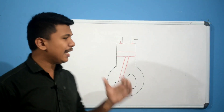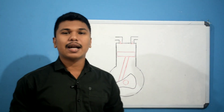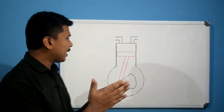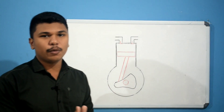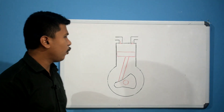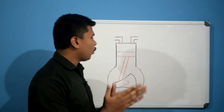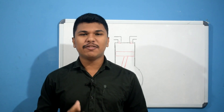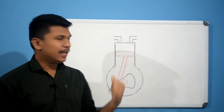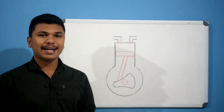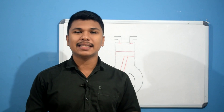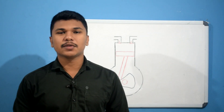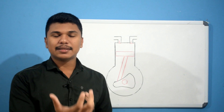Engine oil is a thin layer of film. Engine oil has three functions. The first function is lubrication, which reduces friction. The second function involves removing dust particles and rust particles from the engine.